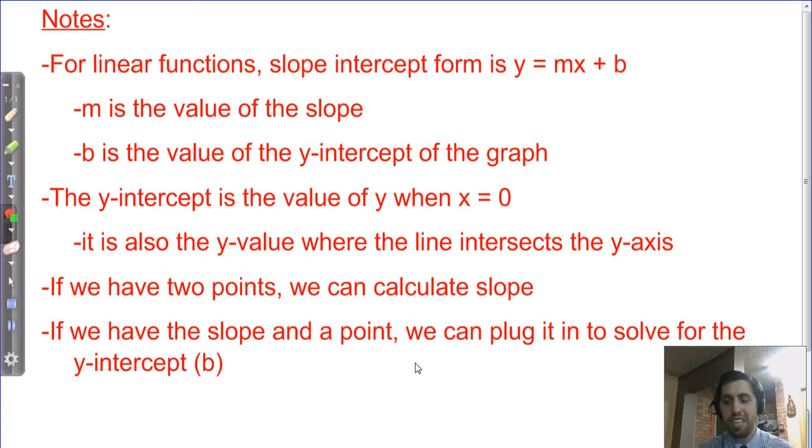So the y-intercept is just where our line hits that y-axis right in the middle of our coordinate plane. So it's the value of y when x equals 0. It's also just the y value where the line intersects the y-axis. So you can often see it. If it intersects at a whole number, sometimes you can just look at a graph and you can just see, oh, I see where it hits the y-axis. It's at 0, negative 3, something like that.